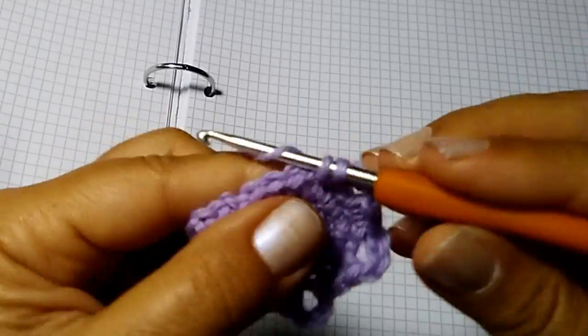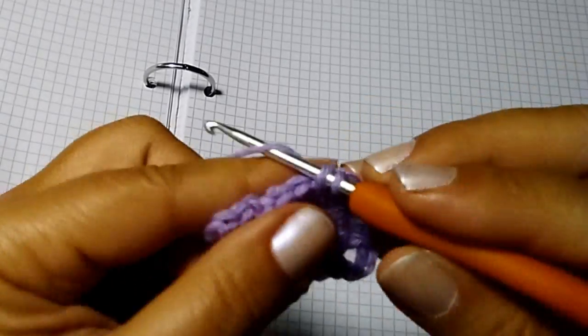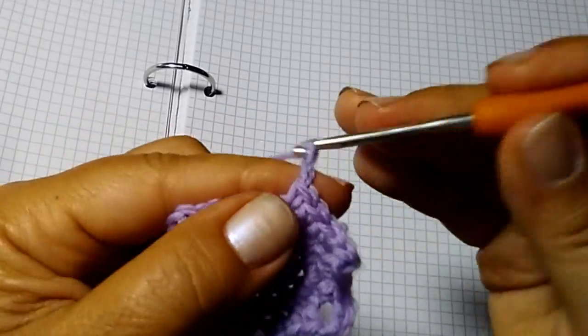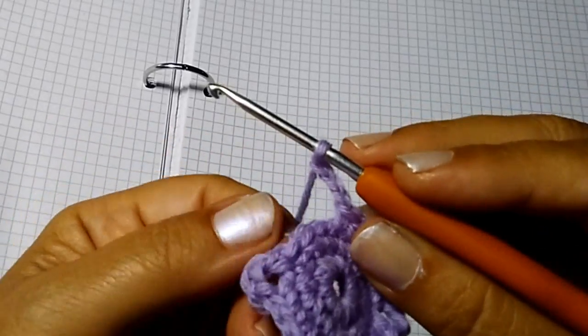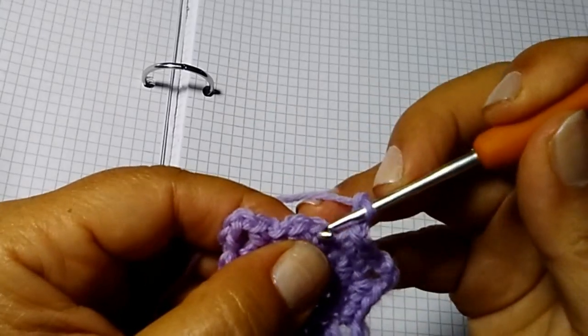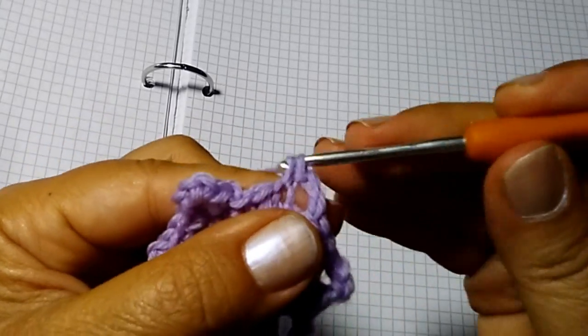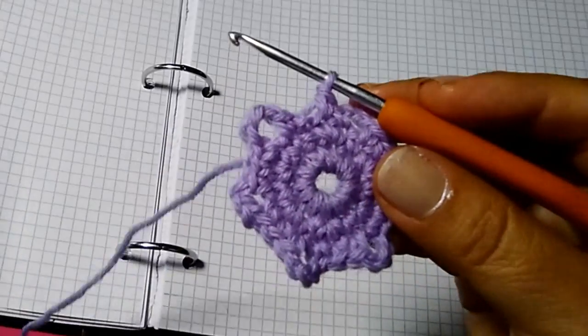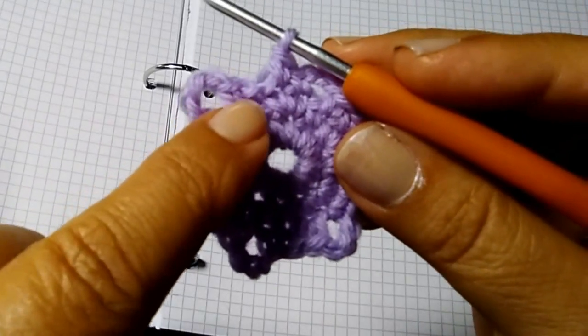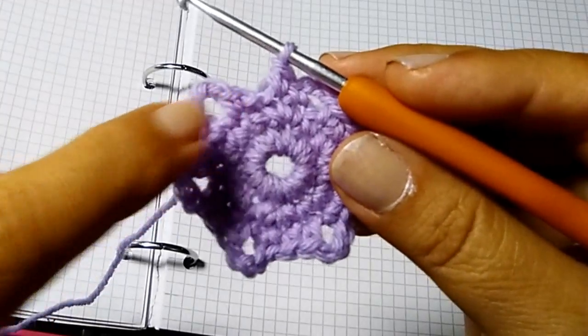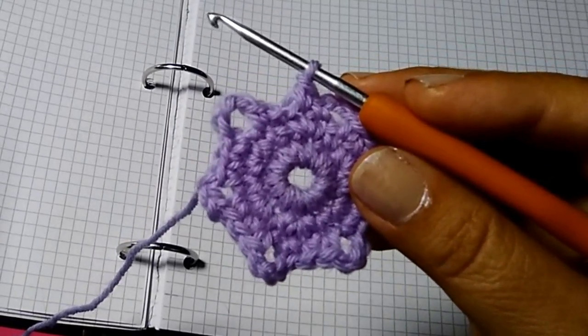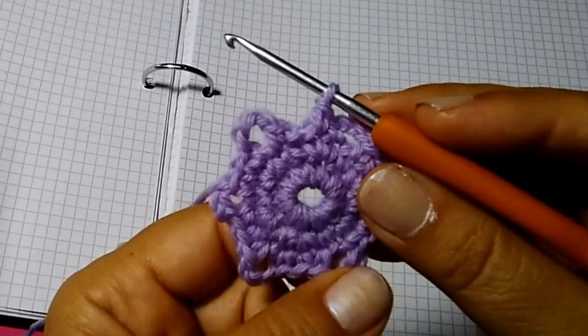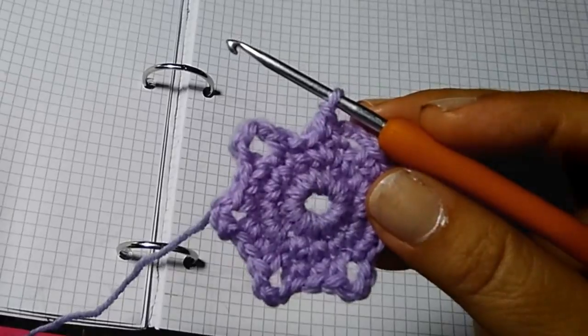Di nuovo 3 catenelle, 3 maglie basse: 1, 2, 3. Di nuovo 3 catenelle, 3 maglie basse: 1, 2, 3. Ed infine 3 catenelle e nelle rimanenti 2 maglie: 2 maglie basse. Per questo giro non dovete chiudere come si fa solitamente con la maglia bassissima nella prima maglia bassa del giro perché inizieremo il prossimo giro direttamente da questa posizione.